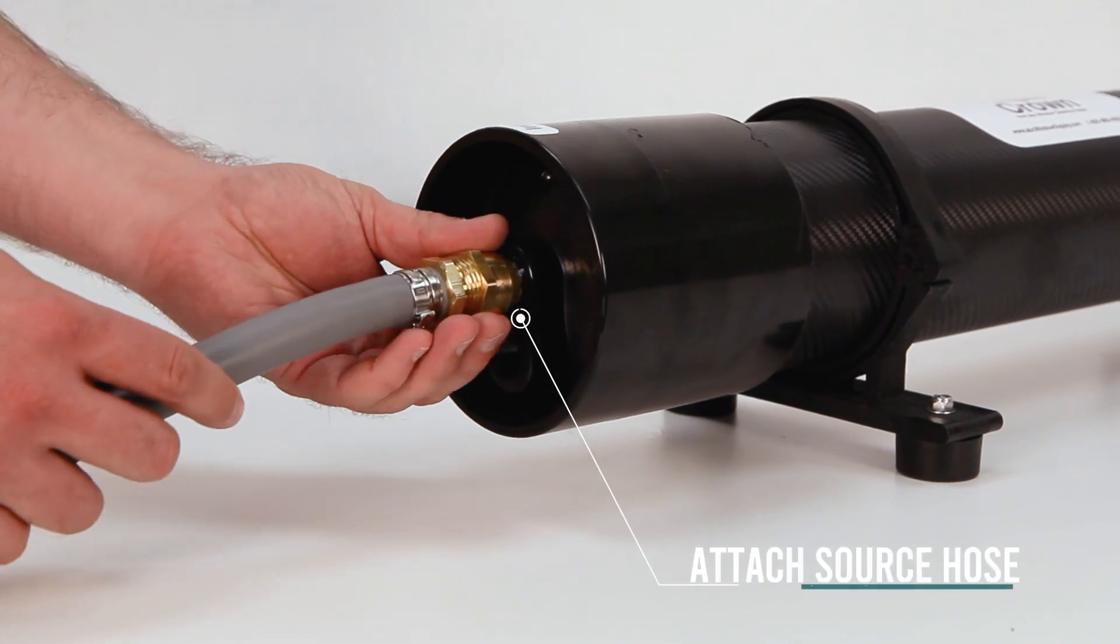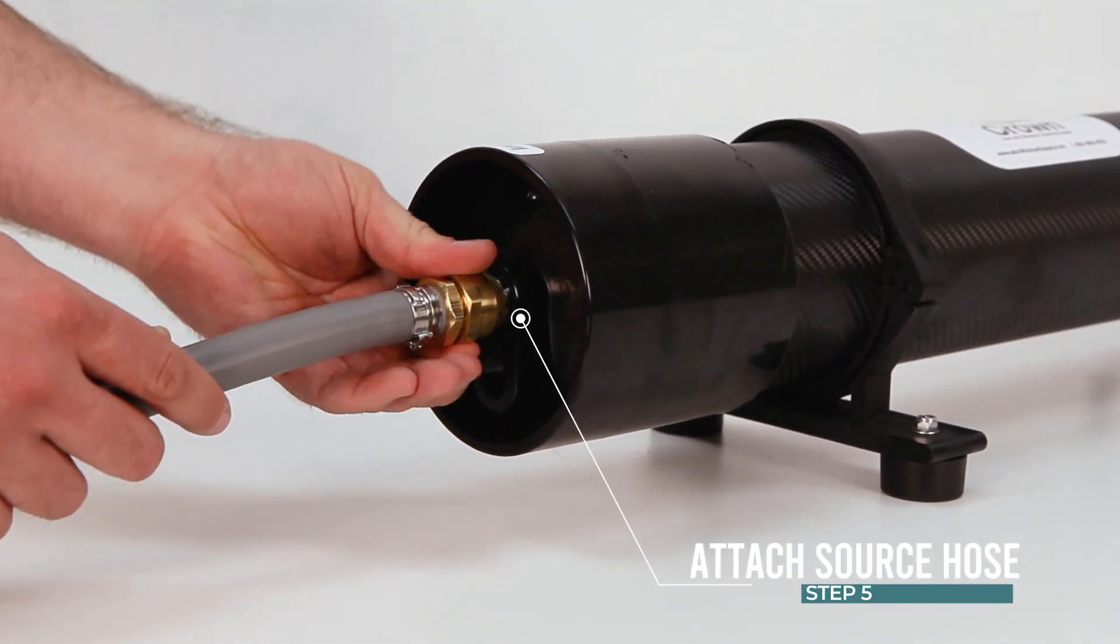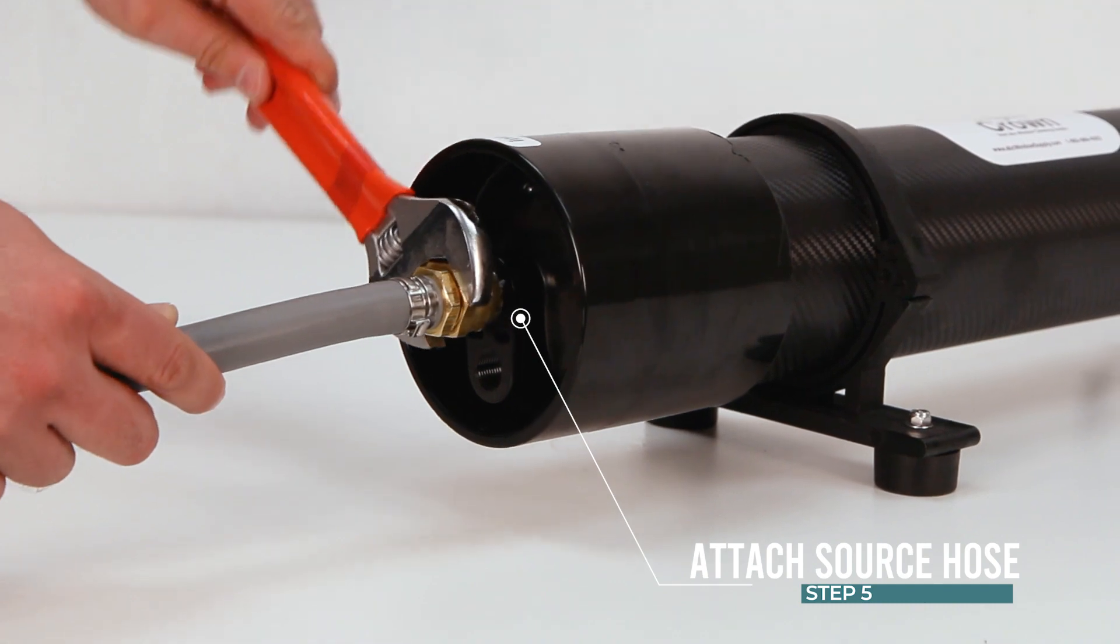Step 5: Attach source hose to water source and the other end to the inlet of the Solo system.